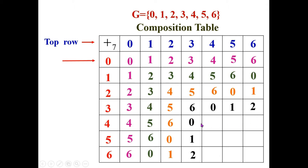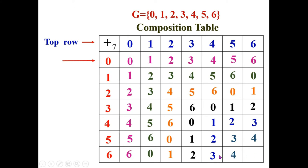Now filling the fifth row headed by 4. 4+4=8: when 8 is divided by 7, remainder is 1. 4+5=9: when 9 is divided by 7, remainder is 2. 4+6=10: when 10 is divided by 7, remainder is 3. We then fill the fifth column — two elements are left: 2, 1, 3. For the sixth row headed by 5: 5+5=10, when 10 is divided by 7, remainder is 3. 5+6=11: when 11 is divided by 7, remainder is 4. We fill the sixth column: write 4. The last element: 6+6=12, when 12 is divided by 7, remainder is 5. This is how we fill the table.